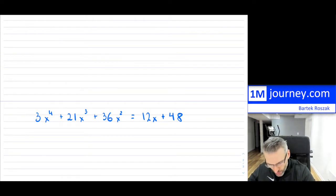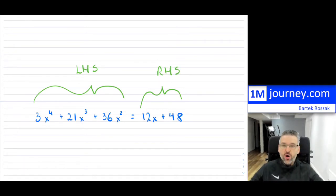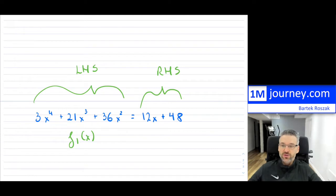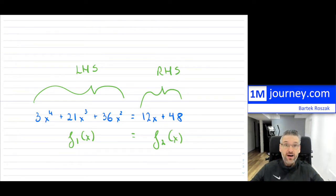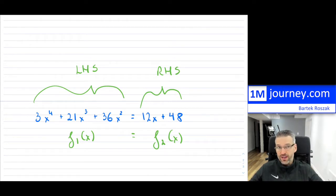I want you to always know the meaning of what we're doing. I'm going to call the left-hand side f1, which equals 3x⁴ + 21x³ + 36x². On the right-hand side, I'll call it f2, which is just a line: 12x + 48 — a slope of 12 and a y-intercept of 48. If I plot these two together, where they intersect — at one or multiple intersection points — those would be the solutions to this equation. So I could jump straight into graphing and see where those points are.